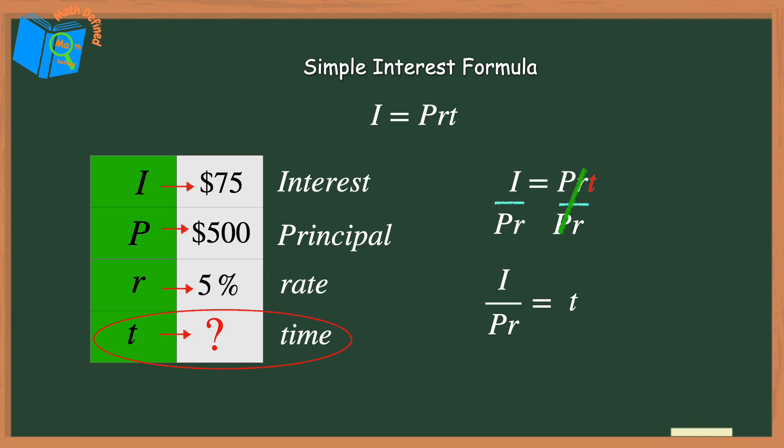Now it's just a matter of substituting in the values for the variables from the table. On the left, the i equals 75. The p equals 500 times the r, that is 5%. But I need to write this percent in decimal form, or 0.05. Now I'll follow order of operations and start in the denominator to multiply 500 times 0.05 to get 25.